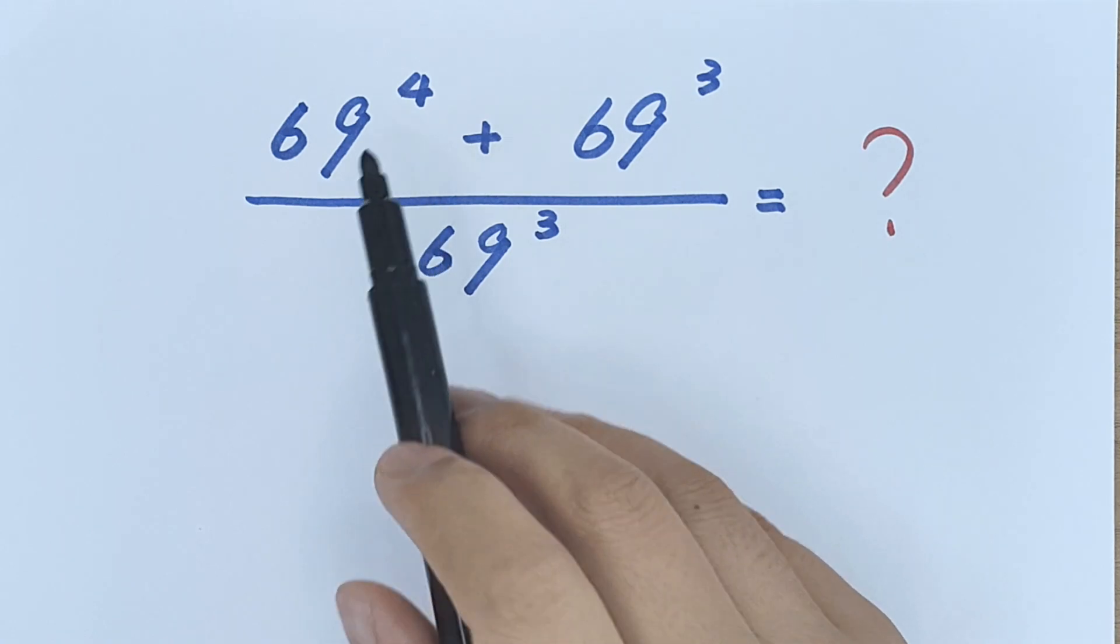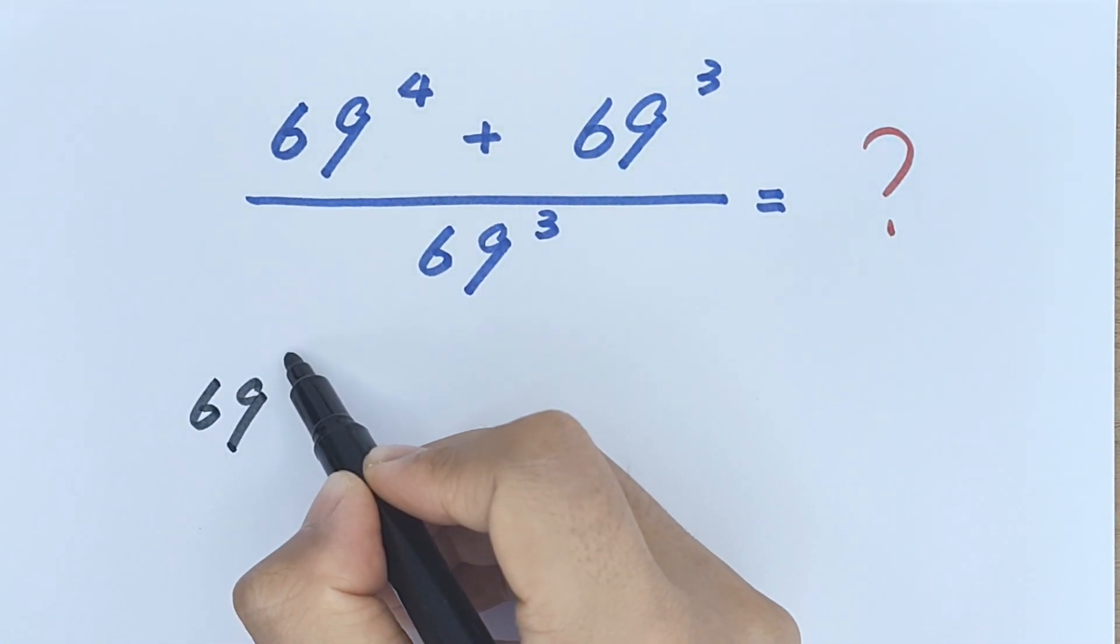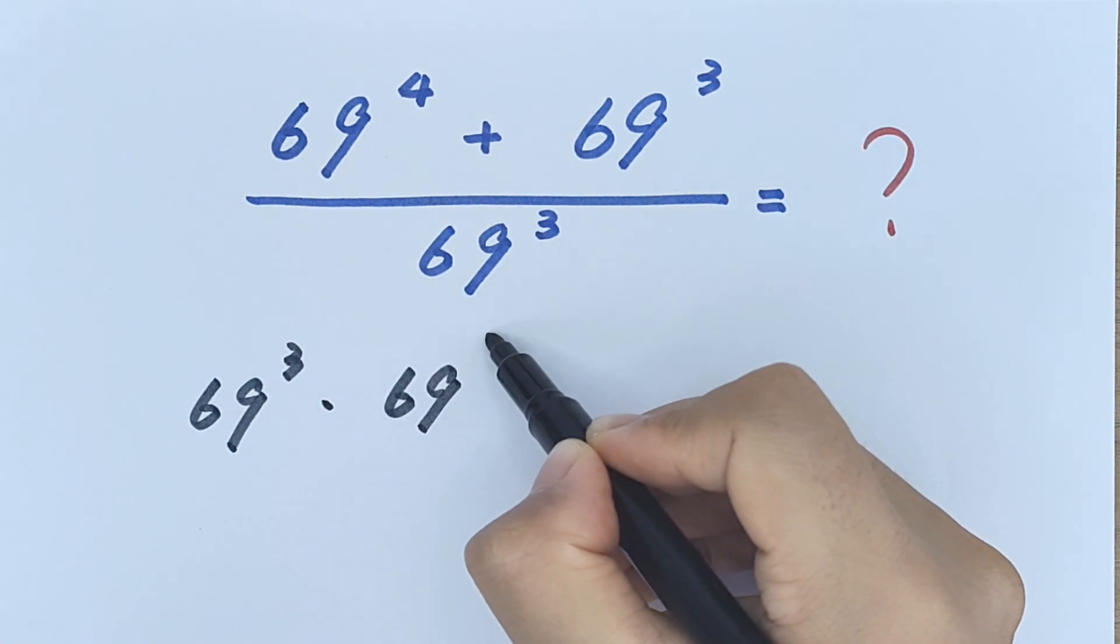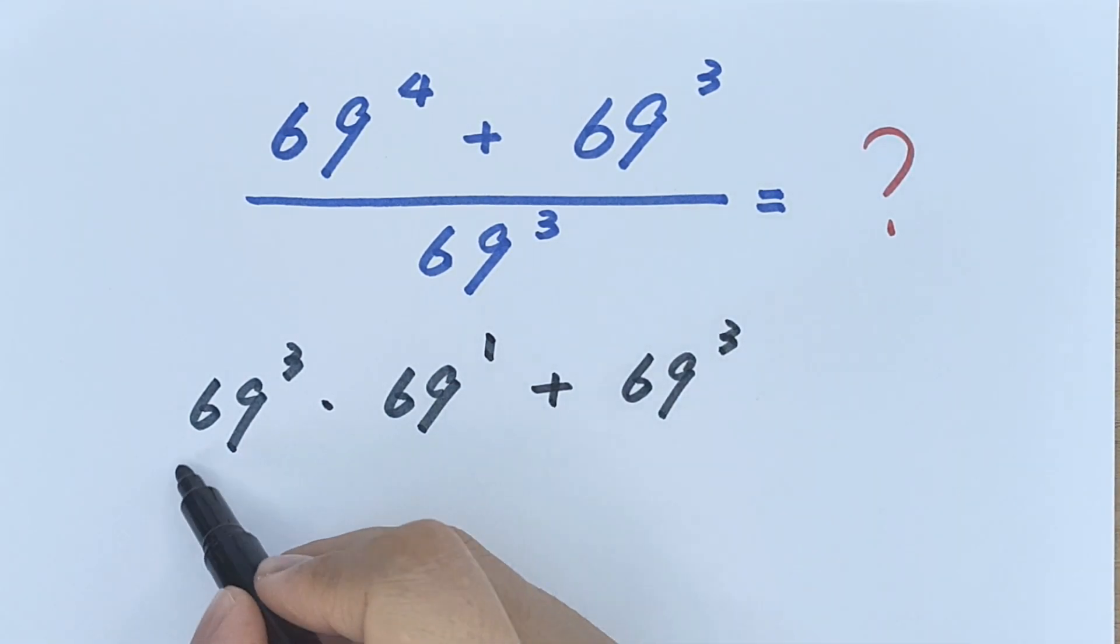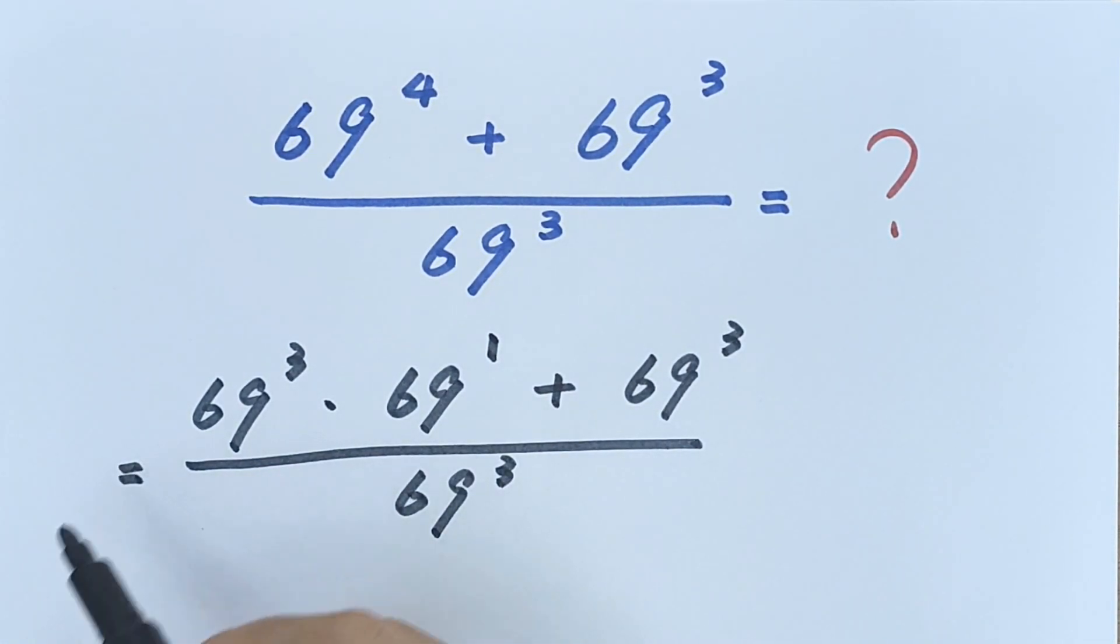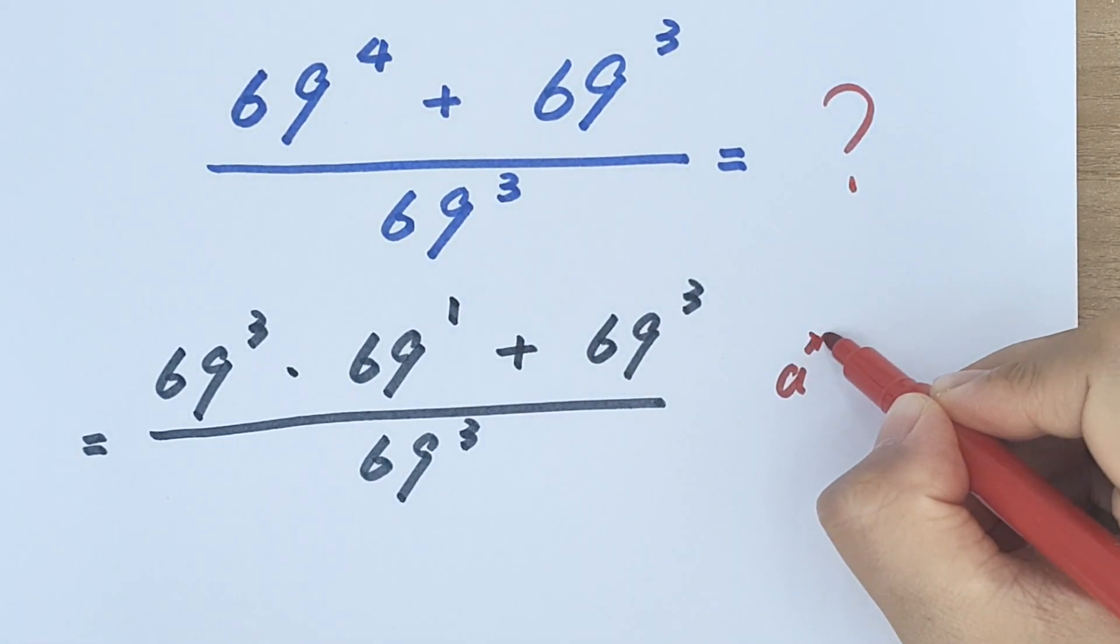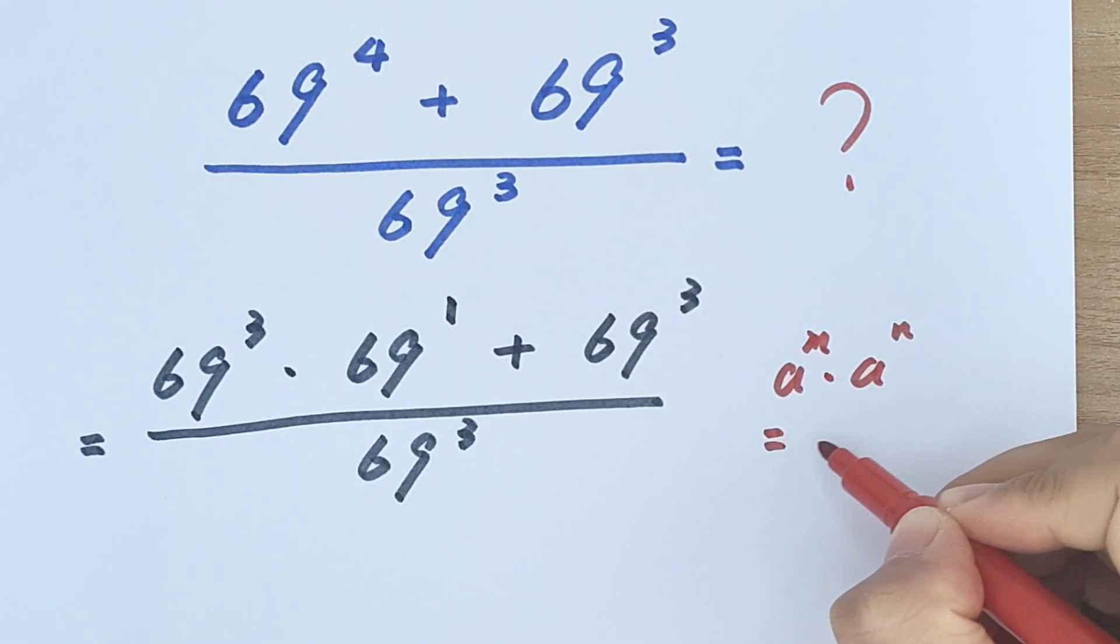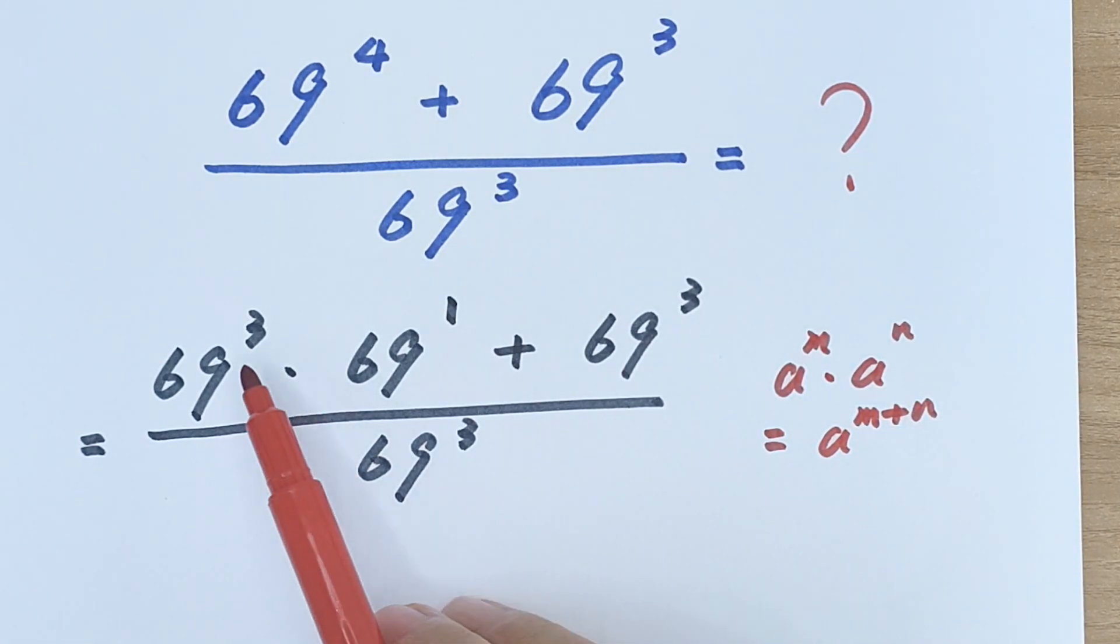69 to the power of 4 is the same as 69 cubed times 69 to the power of 1. Then plus 69 cubed, divided by 69 cubed. Because we know a to the power of m times a to the power of n equals a to the power of m plus n. So 3 plus 1 equals 4.